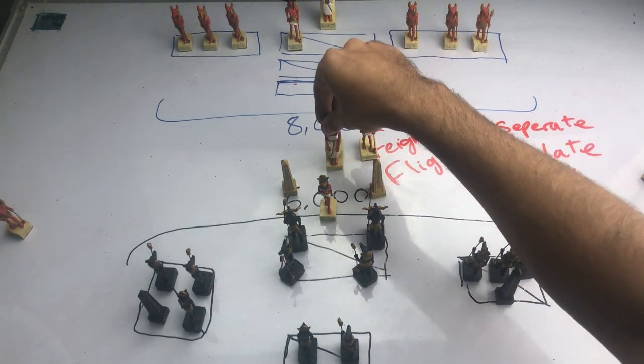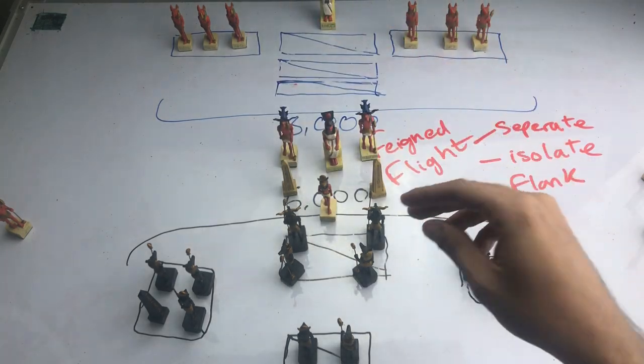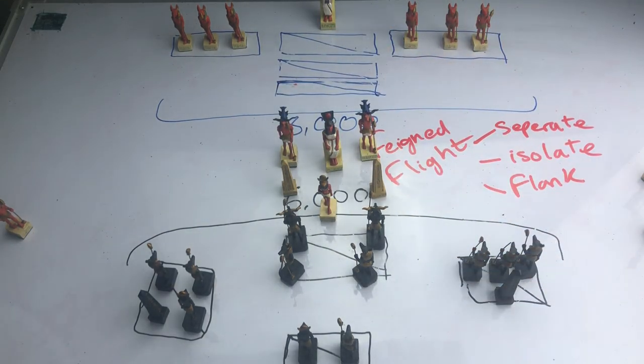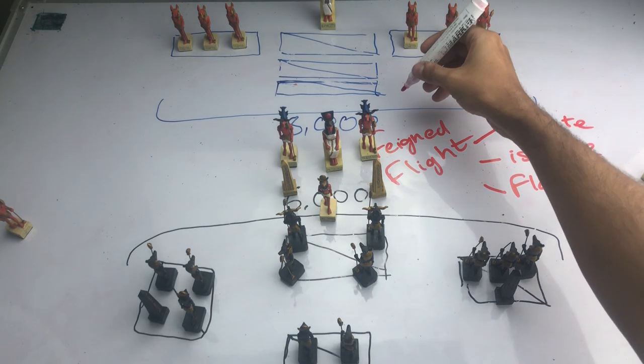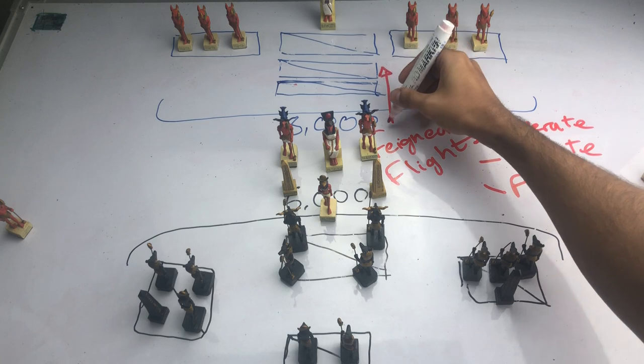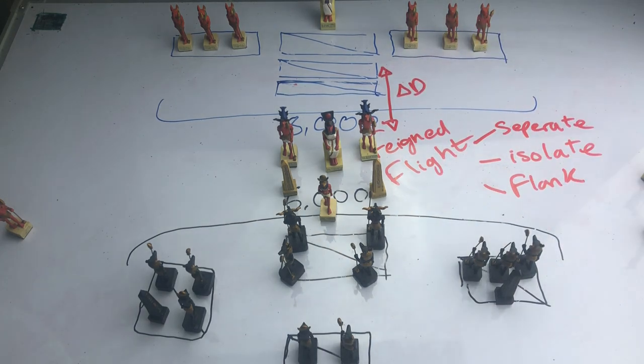Remember we said that the knights were so good at dealing these decisive blows whilst the enemy were running. But, they've fallen right into the trap that the Mongols have laid. Because, as you can see, a distance here has been created between the cavalry and the rest of the men. And the first goal of the Mongols has been executed at this battle. Separate.